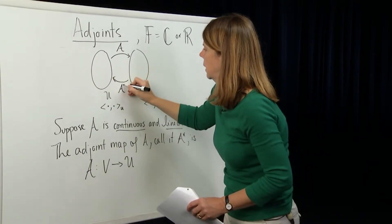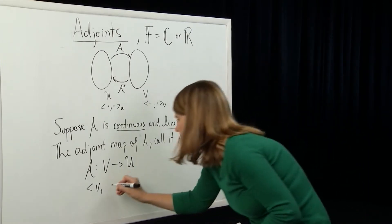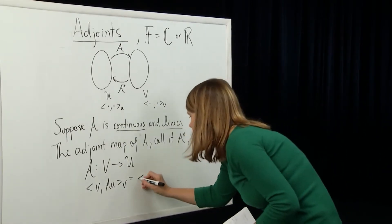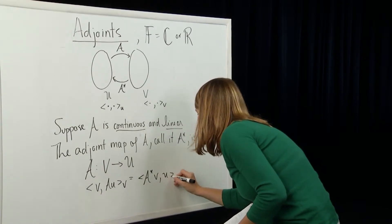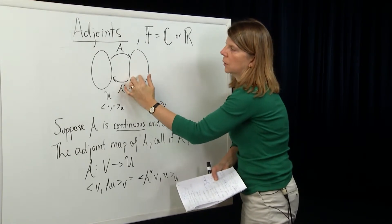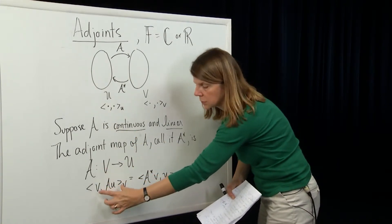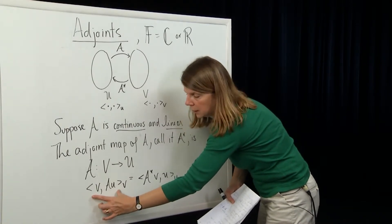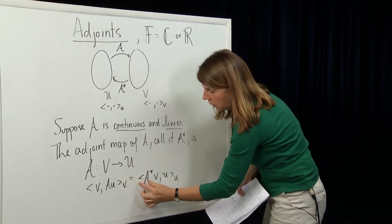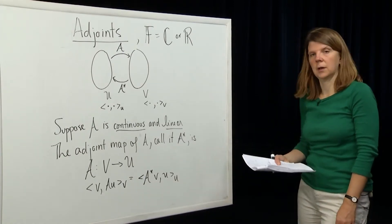A star is defined such that the inner product of a vector v in V with A applied to u — using the inner product over V — equals the inner product of A star v with u over the inner product in U. So the adjoint map A star is a map from the co-domain of A back to the domain of A, defined simply in terms of the inner products on those spaces.